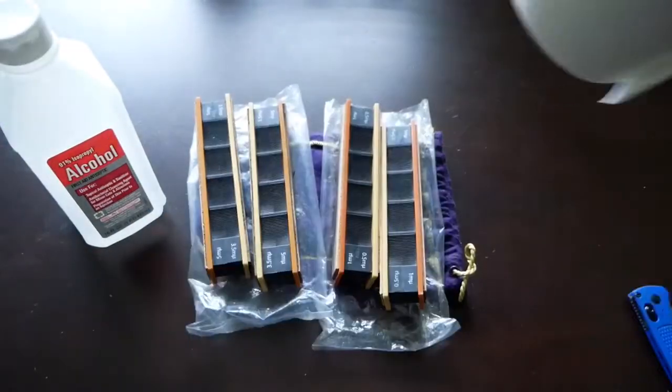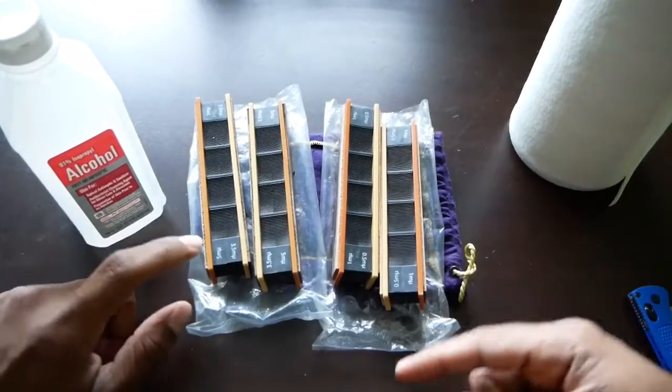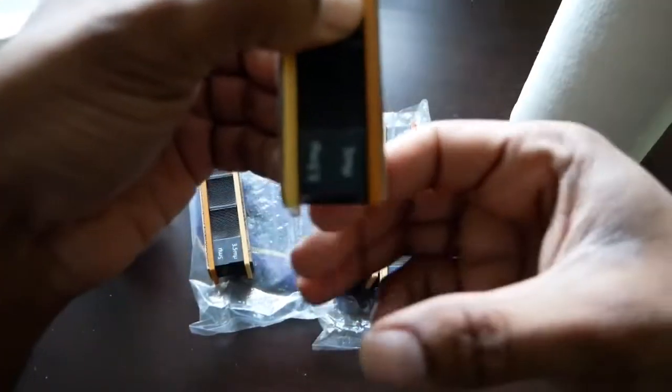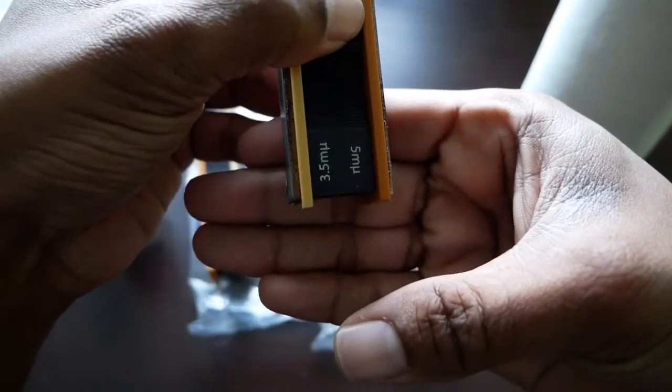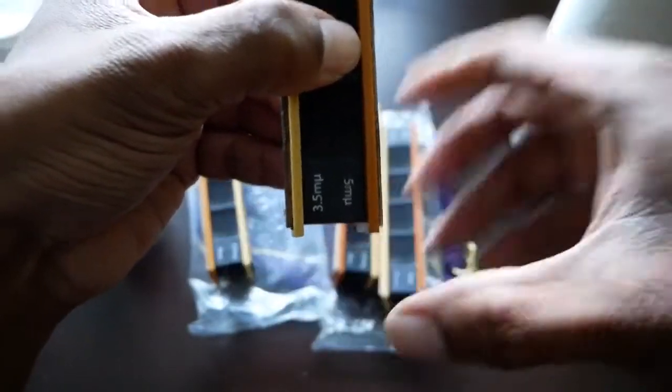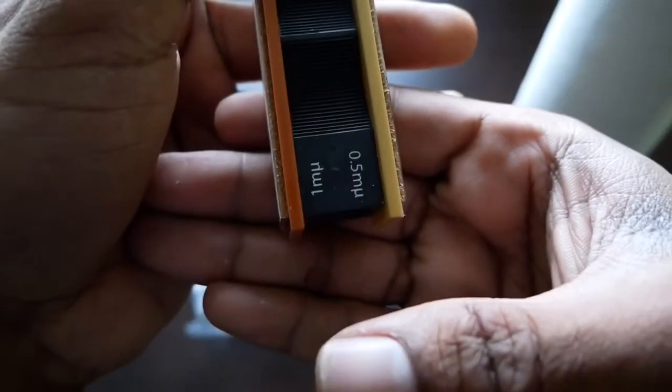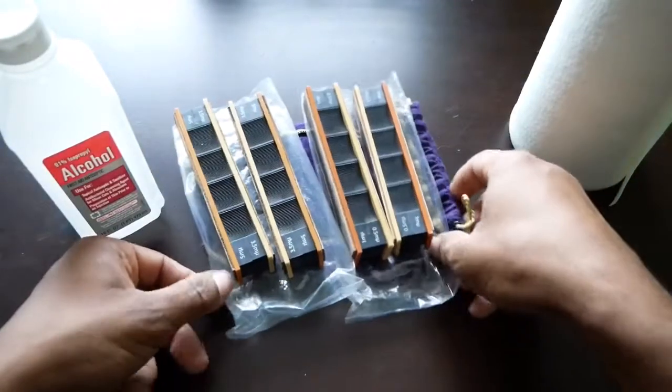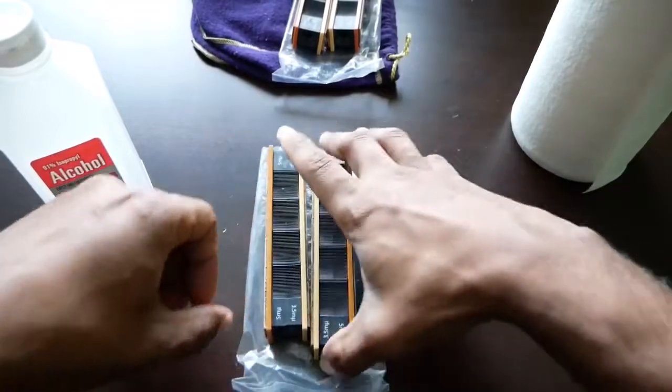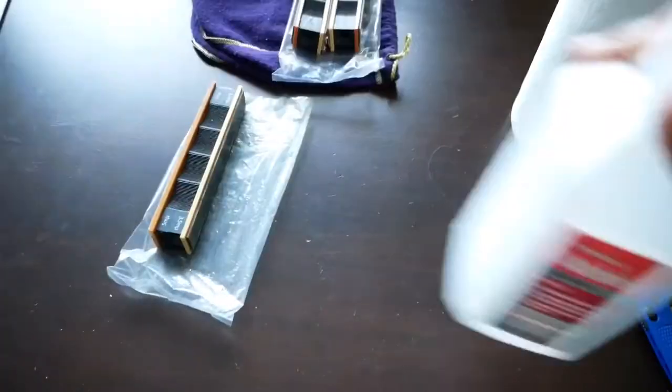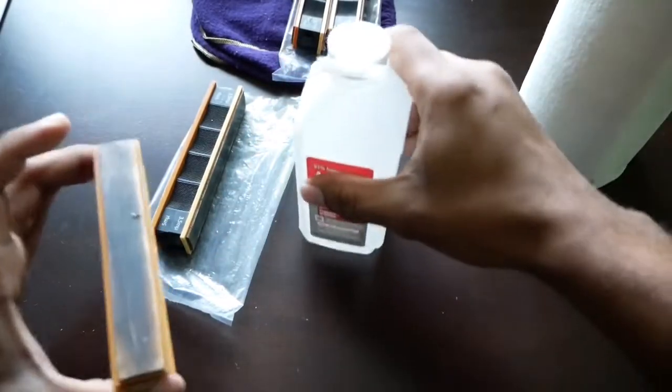By the way, this is the five micron Wicked Edge strop, and three point five micron Wicked Edge strop. And then these are the one and point five micron Wicked Edge strops. So I'm going to start with the more coarse of the two.